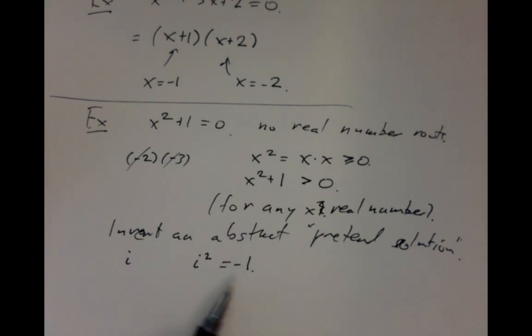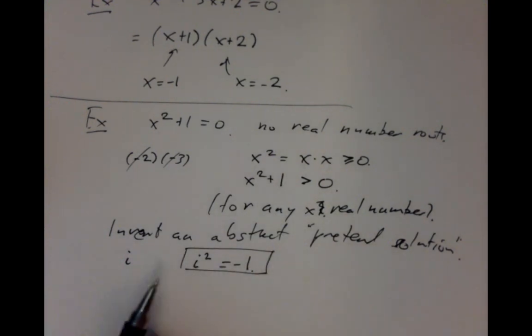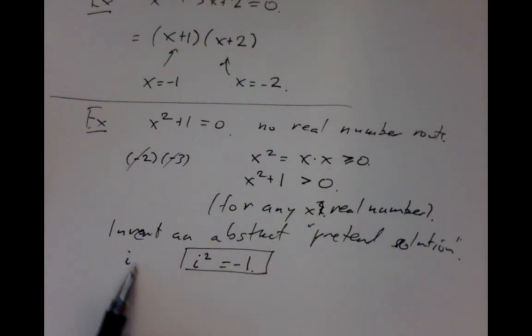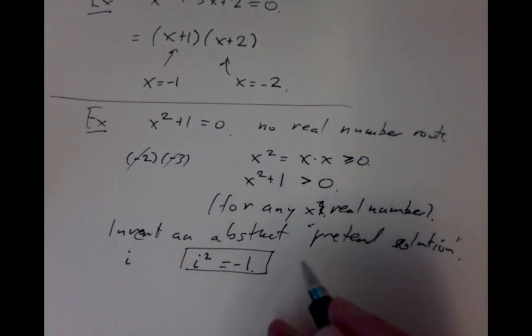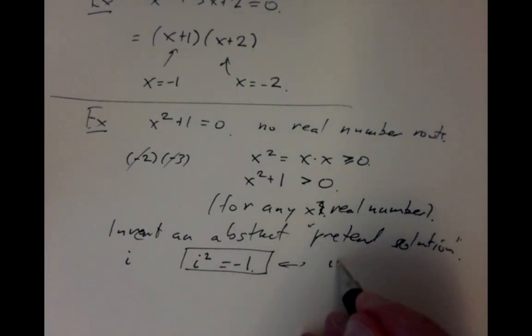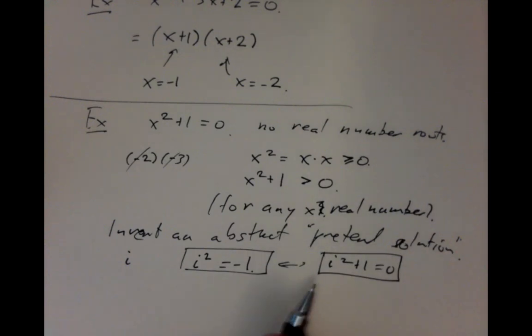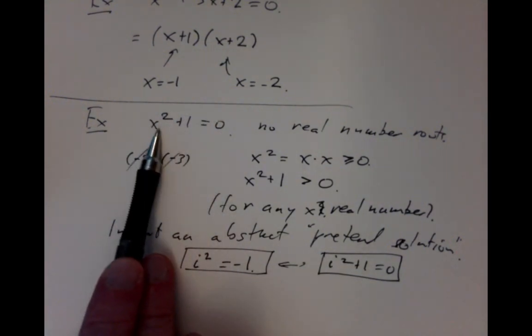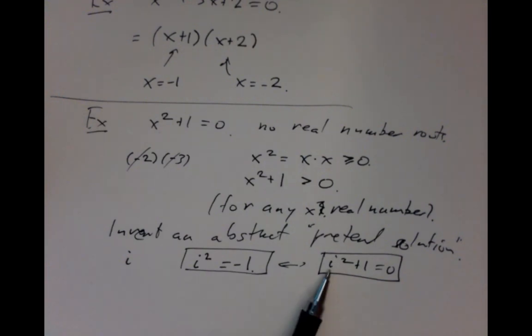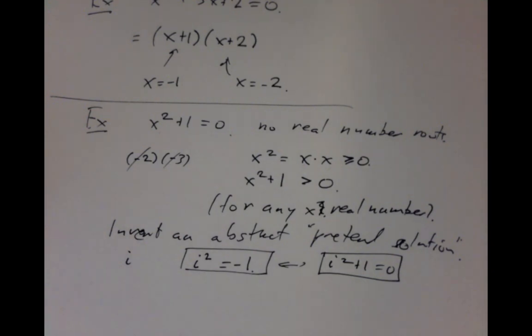Of course, i is not an ordinary real number, because the property used to define it — that i squared equals minus 1, equivalently i squared plus 1 equals 0 — is exactly the equation we wanted to solve that has no real solutions. But if we just pretend there is such a thing, it turns out to be very practical and useful. Once we allow that abstract symbol i into the game, even if there isn't really such a thing, we can start playing with what we call complex numbers.